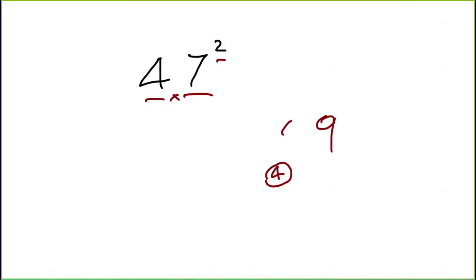Don't forget this 4 down here, so 56 plus 4 is 60. So put the 0 down and carry the 6. Now do this 4, 4 times 4 is 16 plus this 6, so that's 22. Let's put the 22 down, so the answer to 47 squared is 2209.